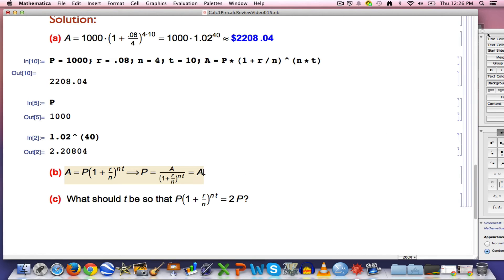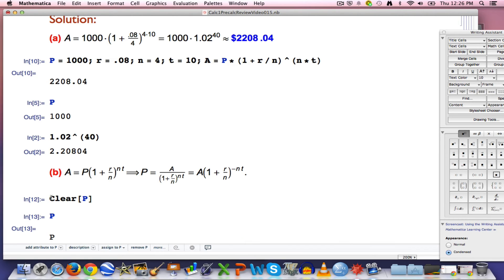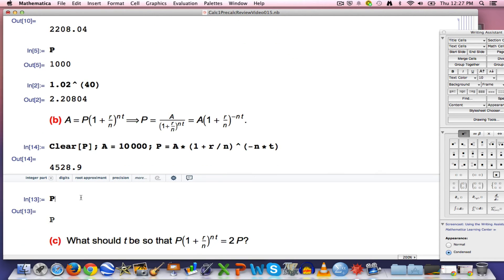Before I do that, let me also remark that I can write it in an alternative form. I can think of the fraction as being A times 1 plus R over N to the negative NT power. That's the definition of negative exponent. So I can write it that way. And I can use the formula now. I'm going to have to clear out the value of P. P still is 1,000. But if I type clear P, now P will not have a value. You can see it's blue. A I can redefine to be the $10,000. I'm keeping R, N, and T the same. So now I can just type P equals A times 1 plus R over N to the negative N times T power. And now this value is stored in P.